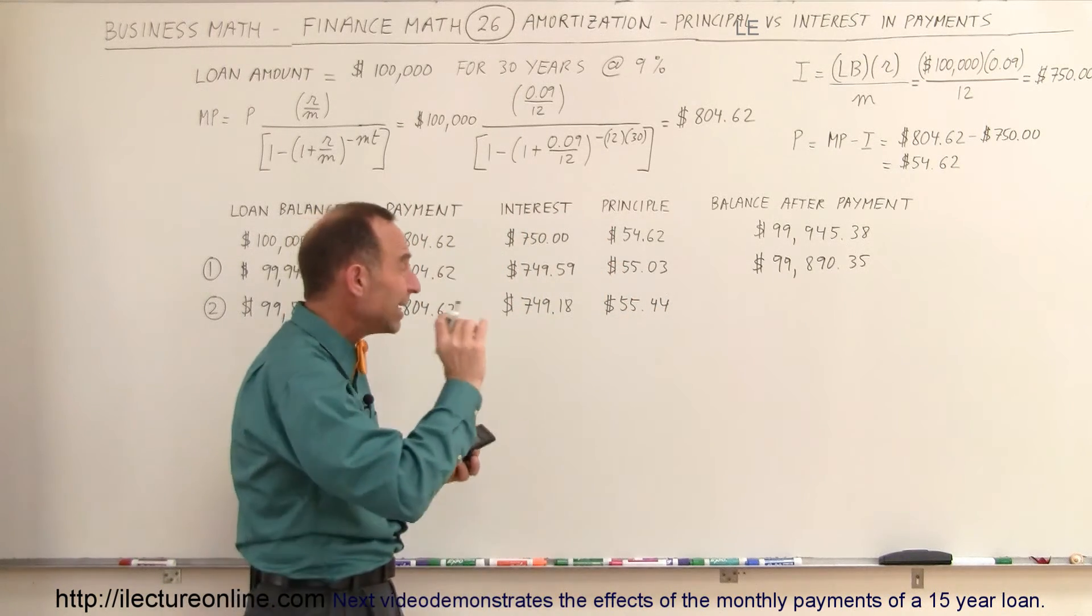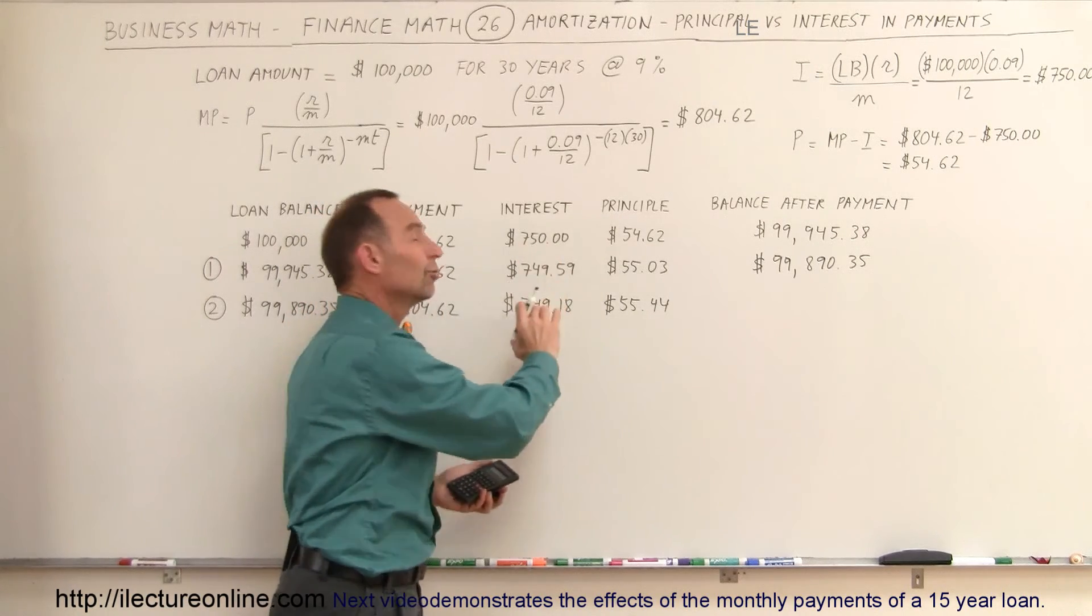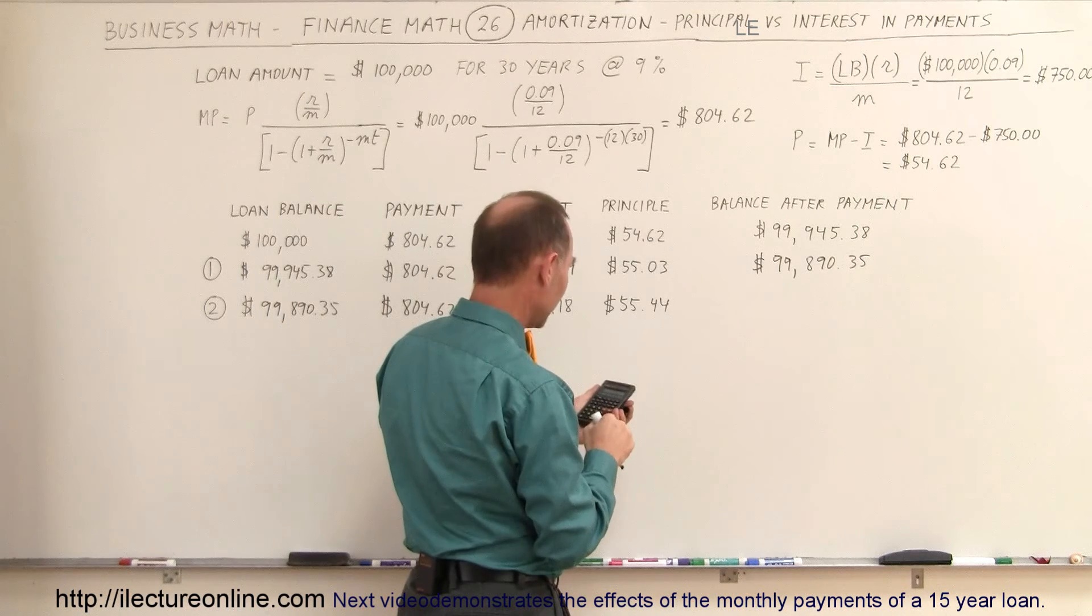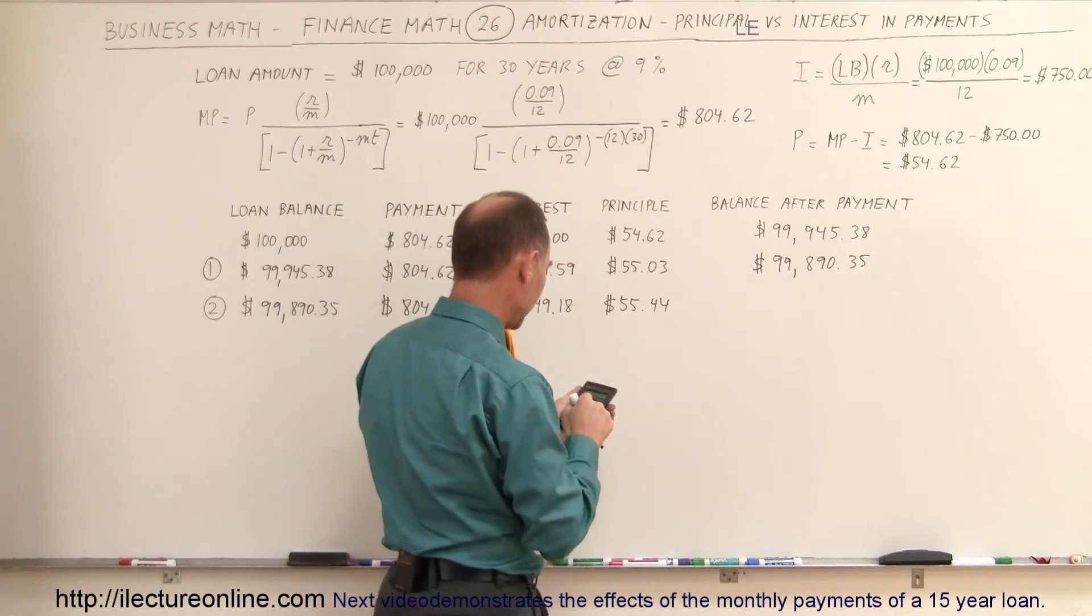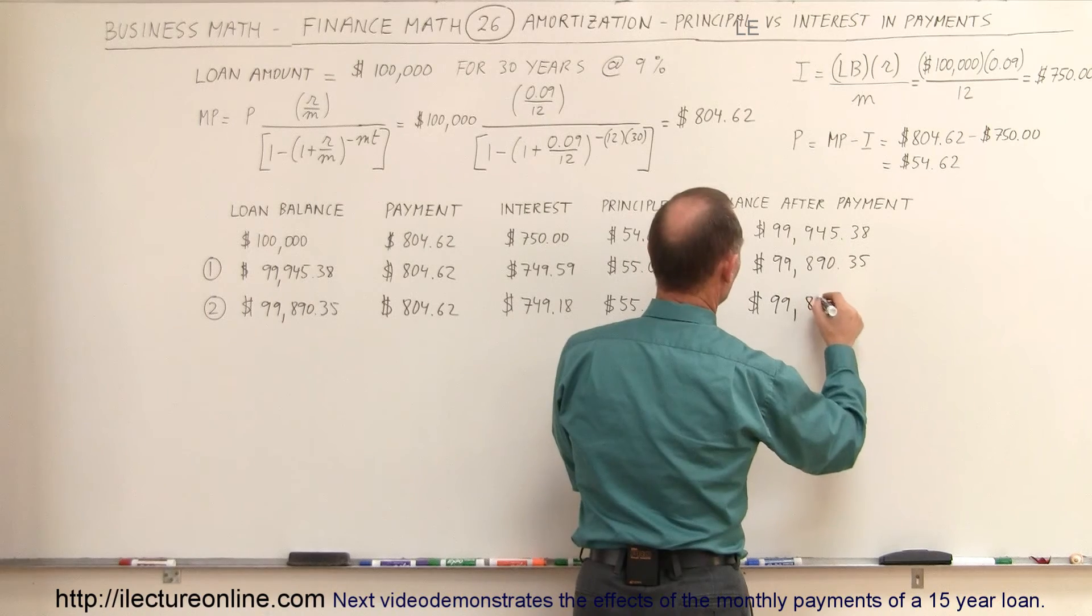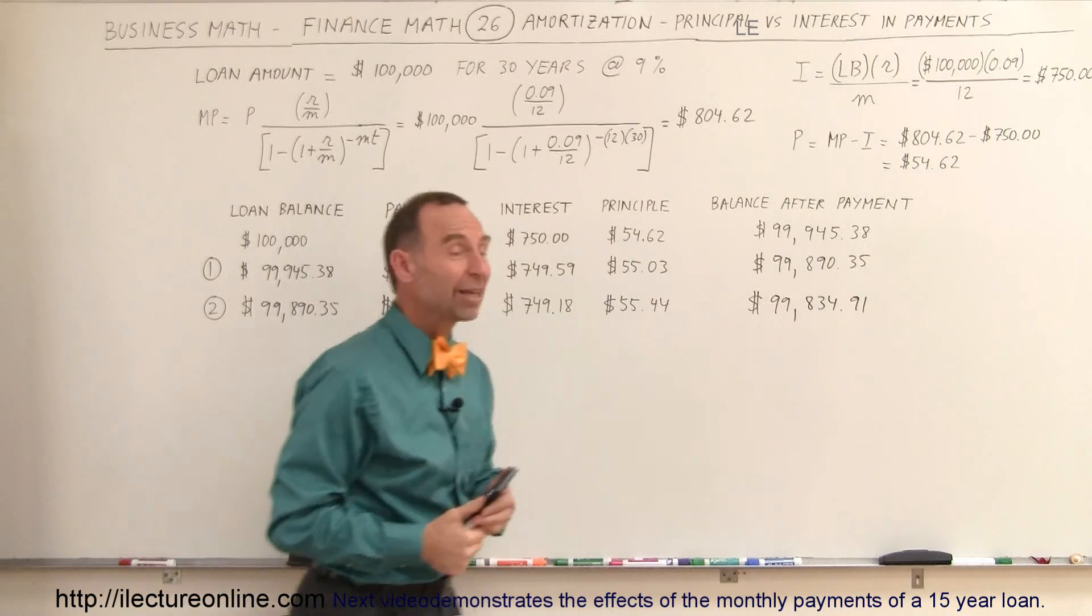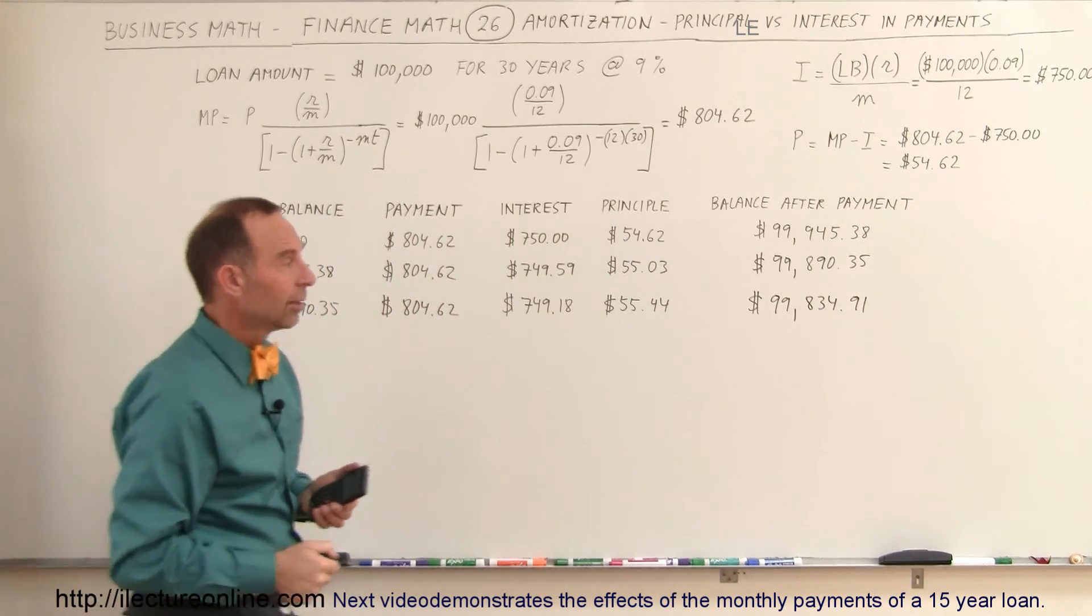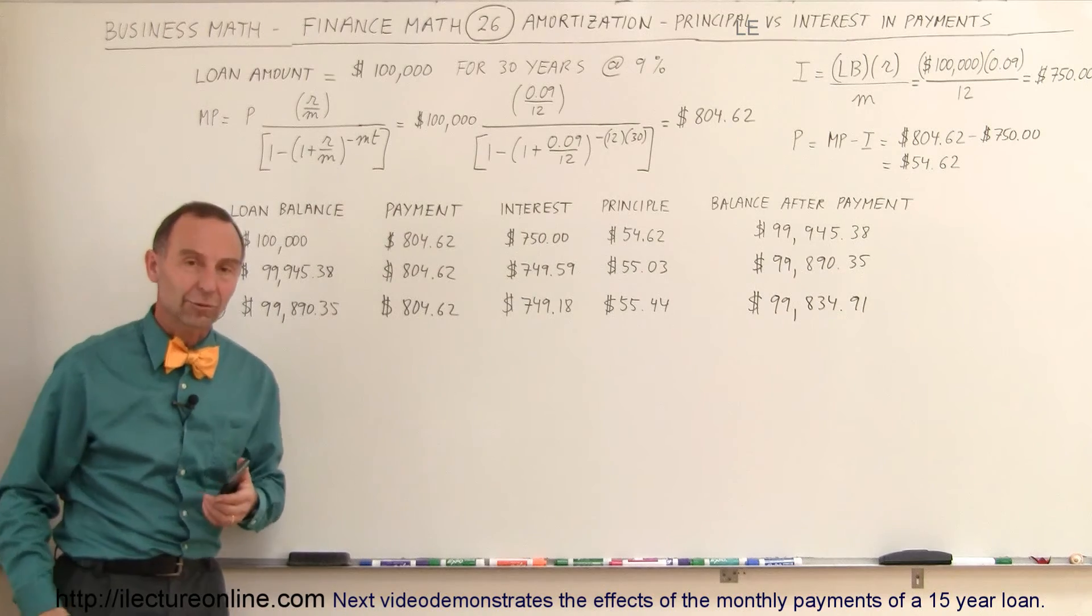So you can see that the amount going to principal increases by a very small amount every month, and that the interest payment reduces very, very slowly. Again, if you subtract this number from the balance of the previous month, we now have a loan balance of $99,834.91. So you can see that after making three payments of over $2,400 in total, your loan balance has been reduced by less than $200. And all the rest goes to the bank in interest payments.